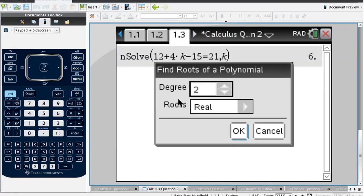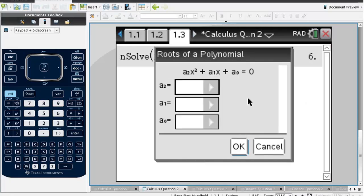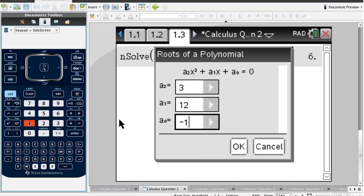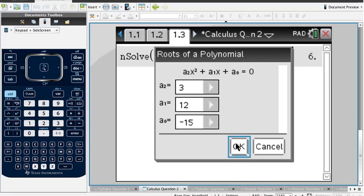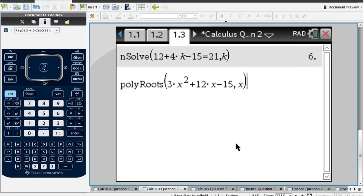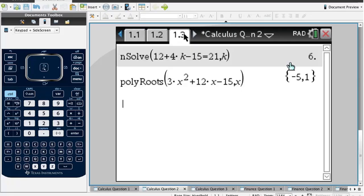We want to solve when that derivative equals zero. We've got a quadratic, so rather than n solve, we can use polynomial tools. Find the roots of a polynomial. Degree is 2, the roots are real. It was 3x squared plus 12x minus 15. Press OK. So the x coordinates of the stationary points are negative 5 and 1.